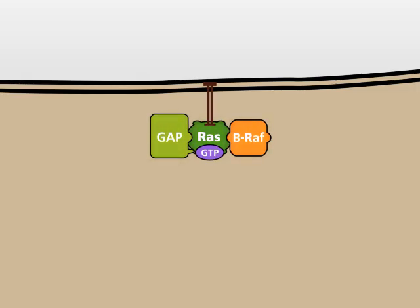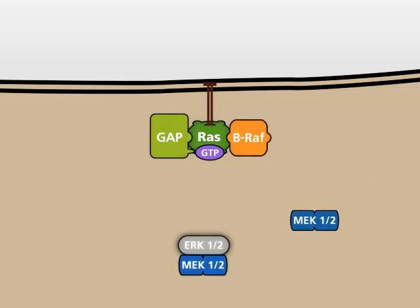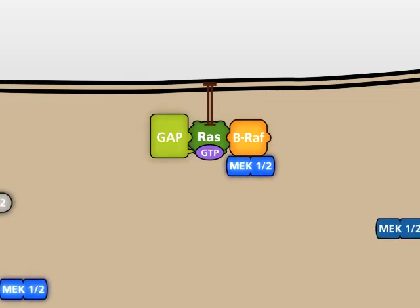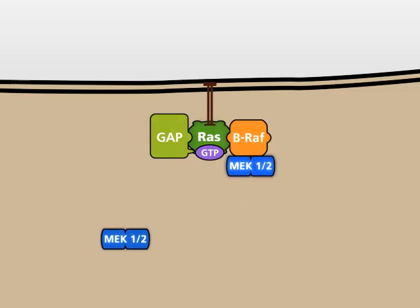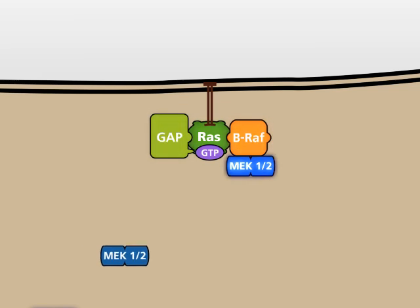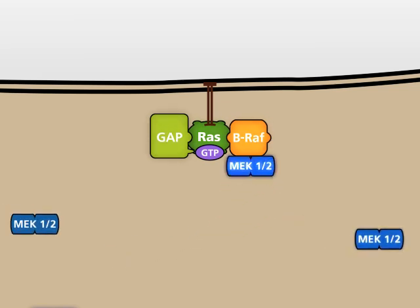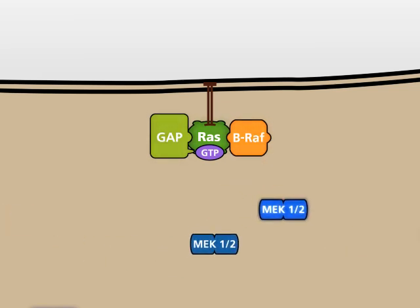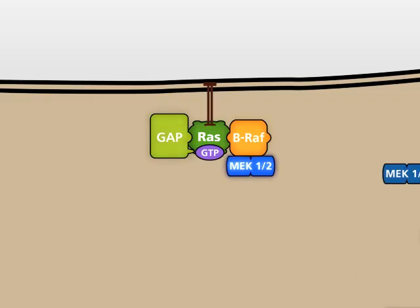BRAF phosphorylates and activates an increasing number of MEK1 and 2 proteins. In turn, MEK1 and 2 activate ERK1 and 2, which activate Jun and FOS. Thus, the kinase cascade is not turned off. A permanently activated MAP kinase signaling pathway results in continuously activated proliferation, which is an important feature of a tumor cell.